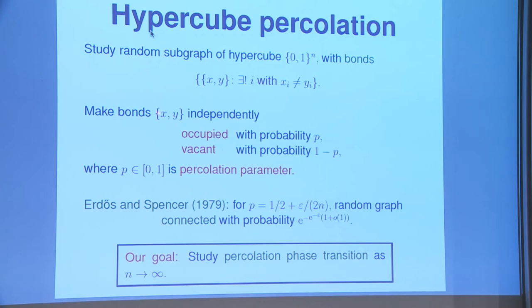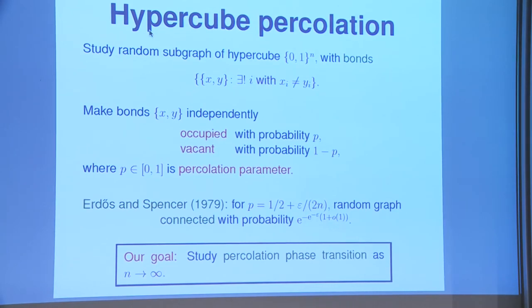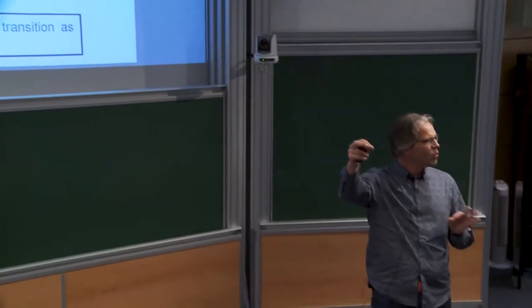Percolation here: we look at bonds and make them independently occupied or vacant with probability p, removing vacant edges from the graph so we have a random subgraph and walk only along remaining edges. This model was first studied by Erdős and Spencer in 1979, looking at the connectivity transition — how large p must be for the graph to remain completely connected.